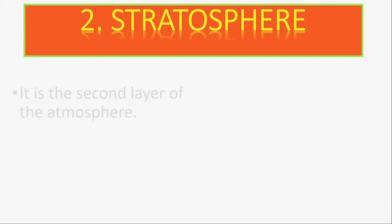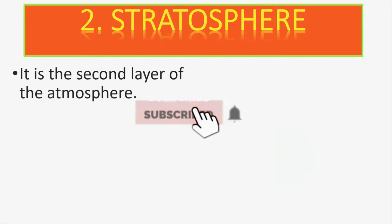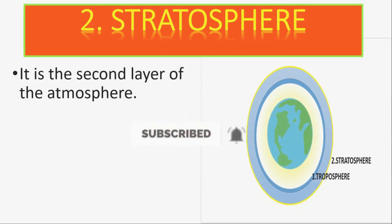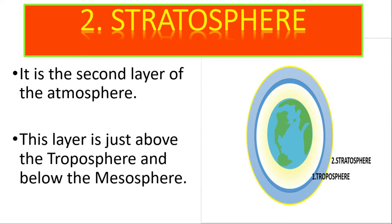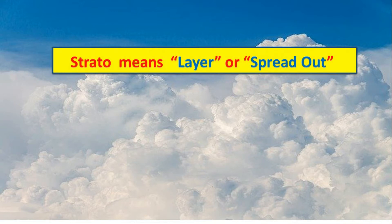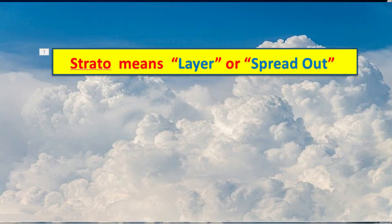Stratosphere — it is the second layer of the atmosphere. The first layer is the troposphere and the second layer is the stratosphere. This layer is just above the troposphere and below the mesosphere. The word 'strato' means layer or spread out.